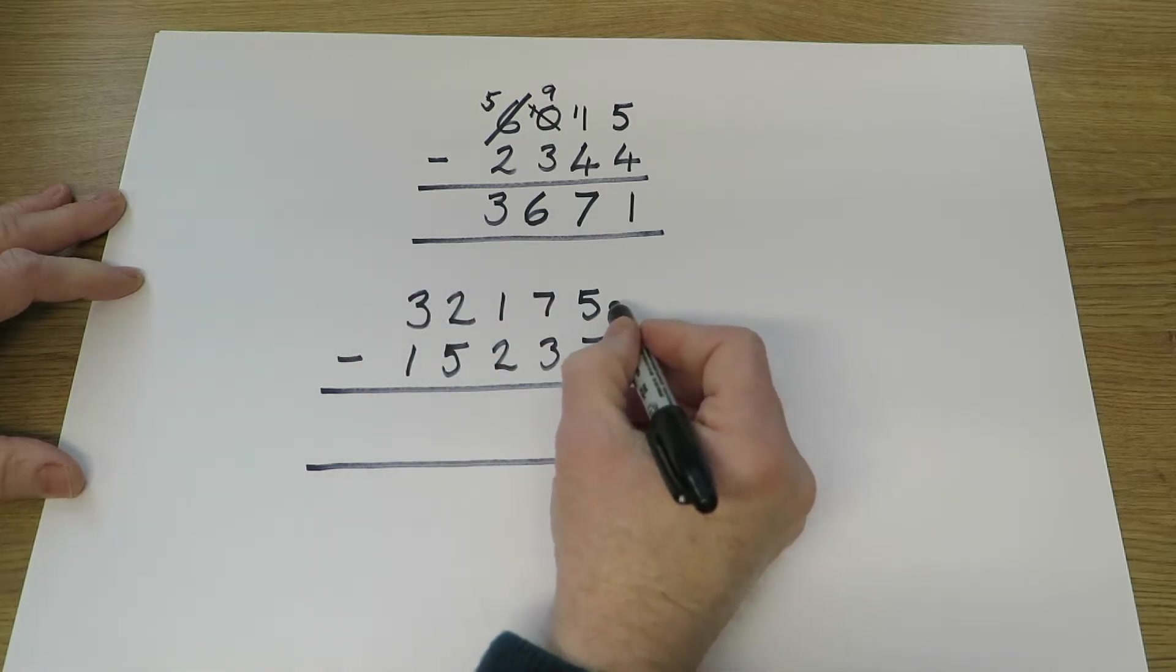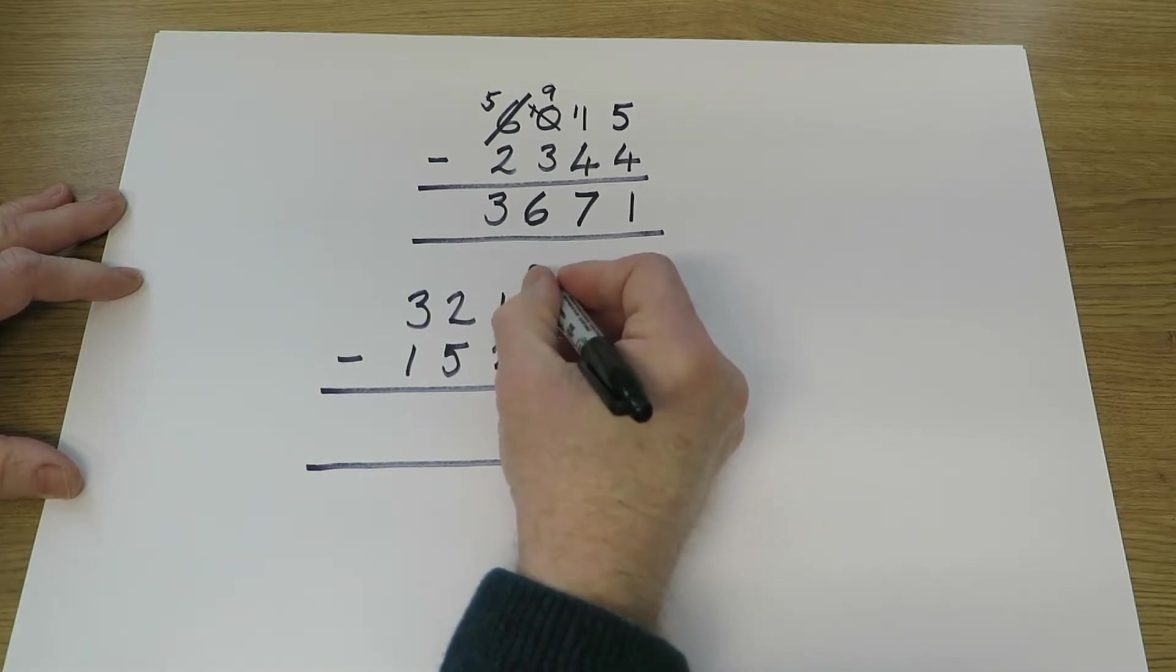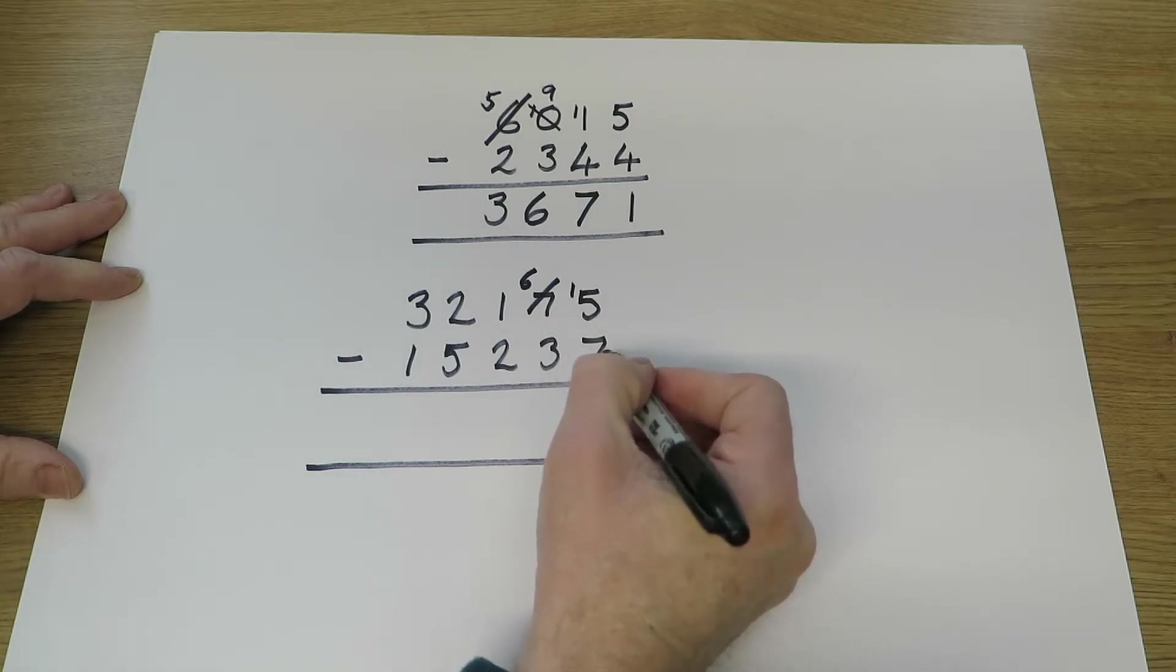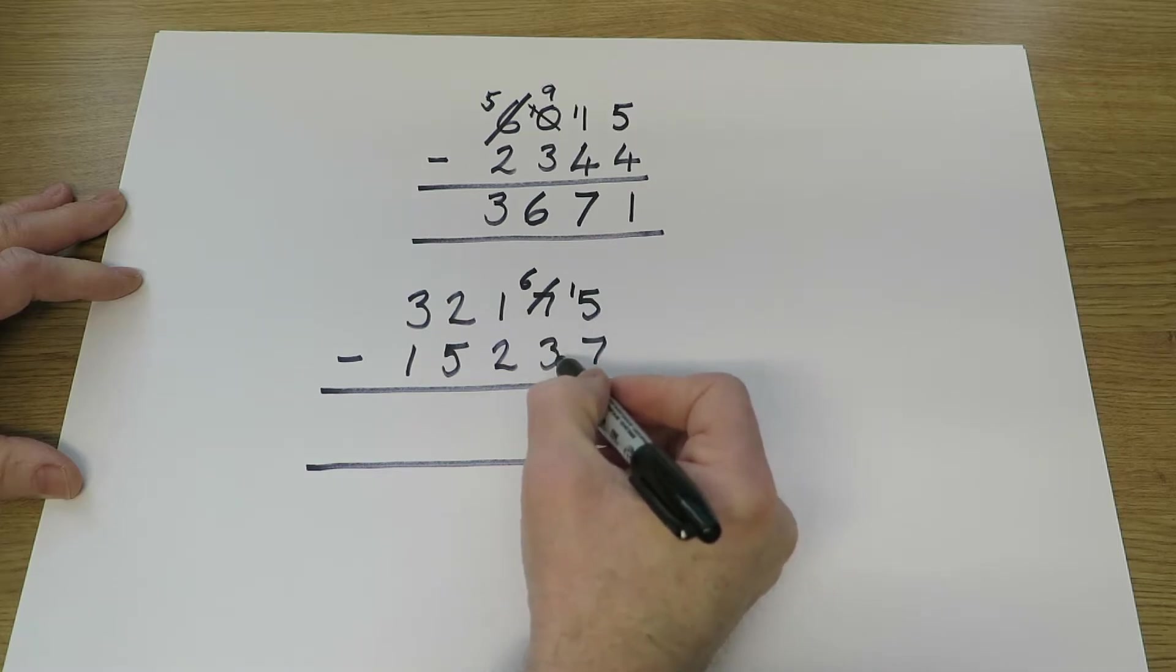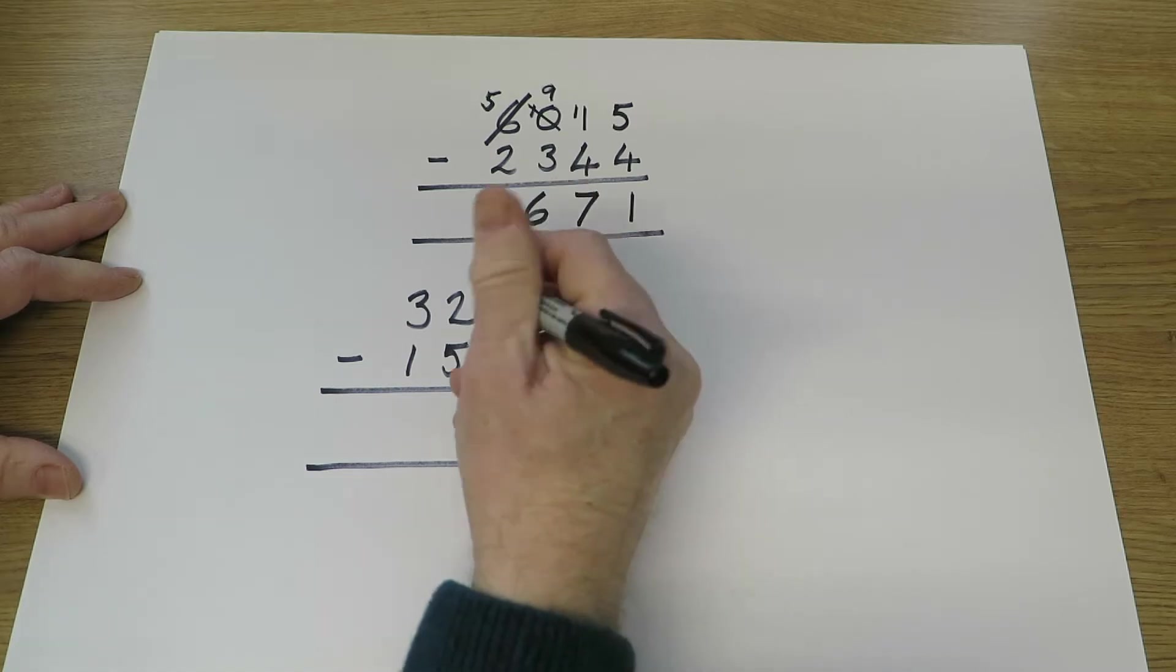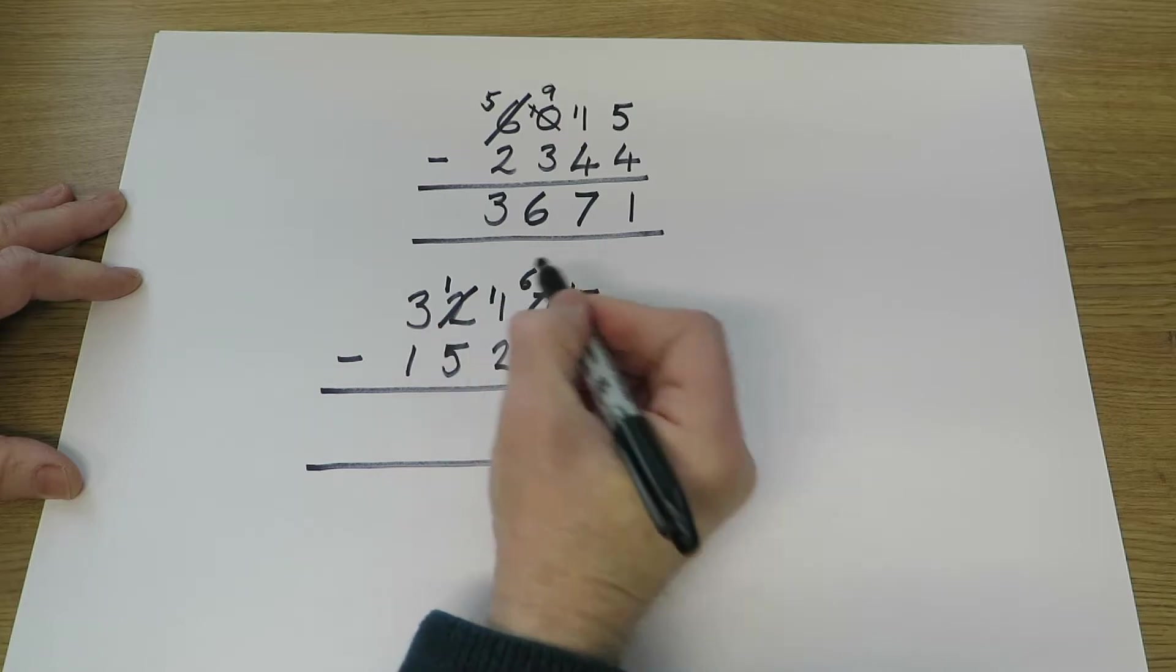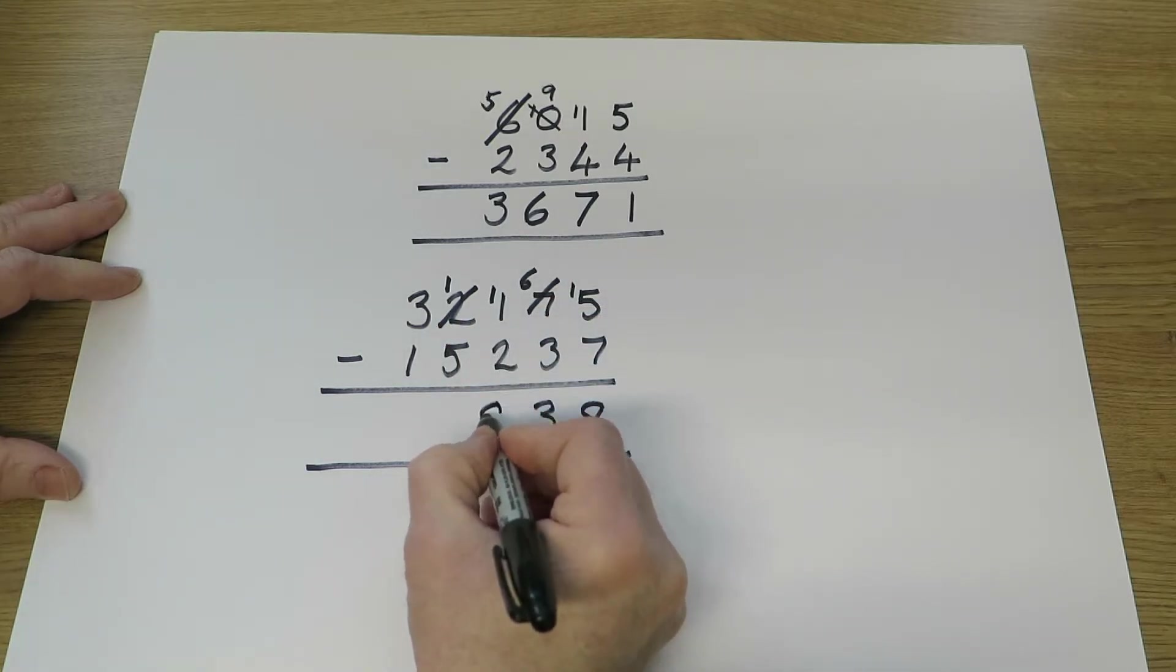Starting, of course, at the units, 5 subtract 7. There aren't enough units. Cross out the 7 tens, leave 6 tens. We've now got 15 units. 15 take away 7 is 8 units. 6 tens take away 3 tens is 3 tens. 100 take away 200. Not enough hundreds, so use one of the thousands. That leaves 1,000 there. Gives us 10 extra hundreds. So now we've got 11 hundreds. Take away 2 hundreds is 9 hundreds.